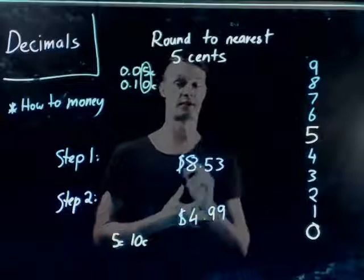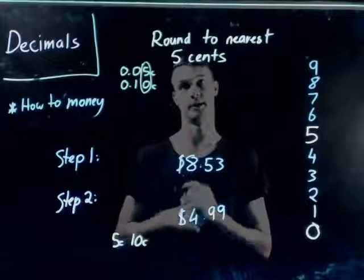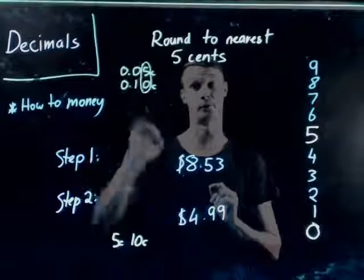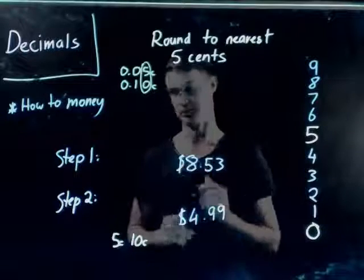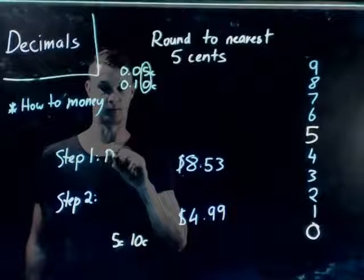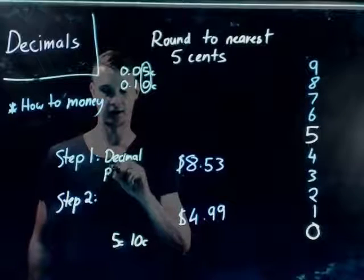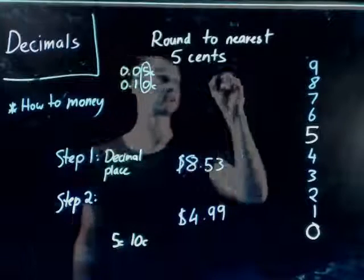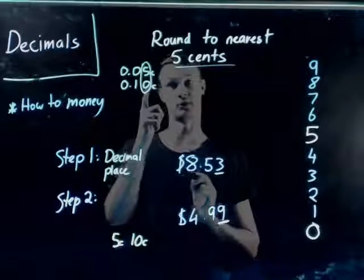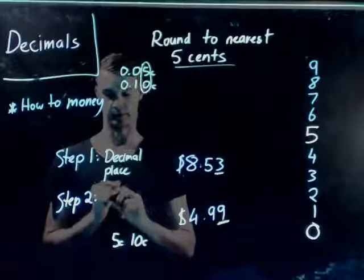So this is what we're going to do with this question — round to the nearest five cents. We've got two examples here. The number needs to end in either five or zero. We're going to go through two steps. Step one: make sure you know which decimal place. Here it says we're rounding to the nearest five cents, so we're going to be focusing on the cents columns.